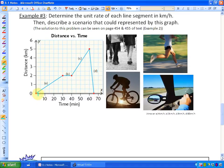What you're noticing on this graph is that the horizontal axis is time. The vertical axis is distance in kilometers.